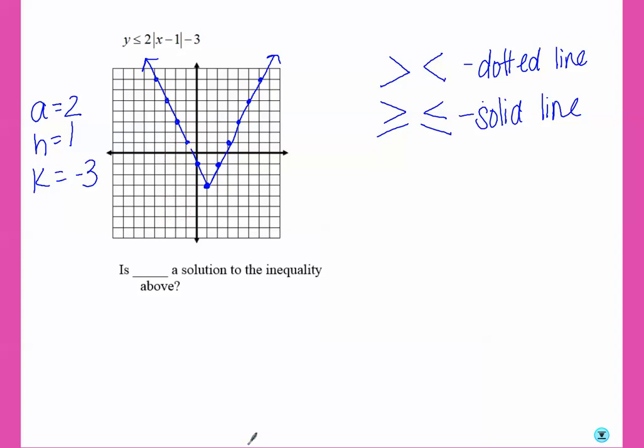So now we need to look at our equation for which way to shade. This is where the y's are less than that graph. Well, the y's are less below the line. So we're going to shade the outside.